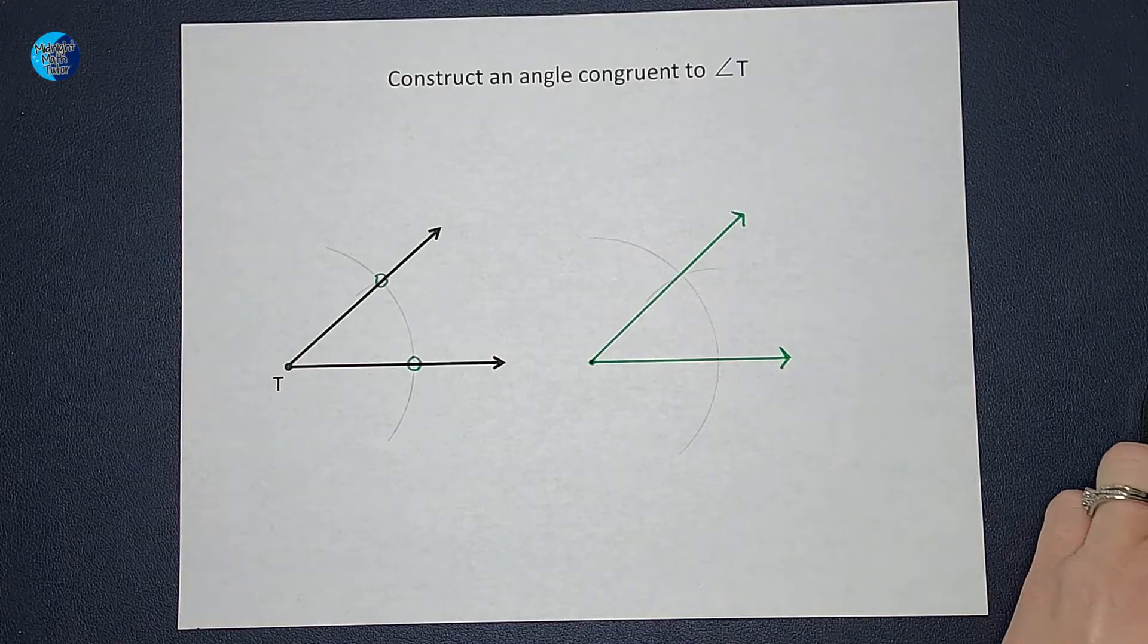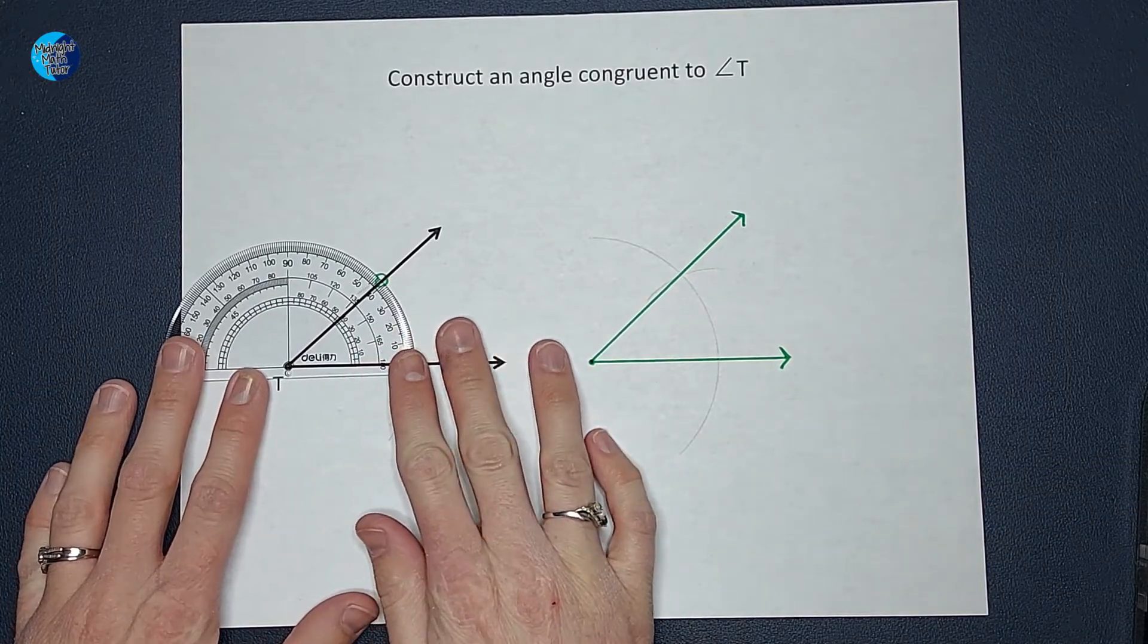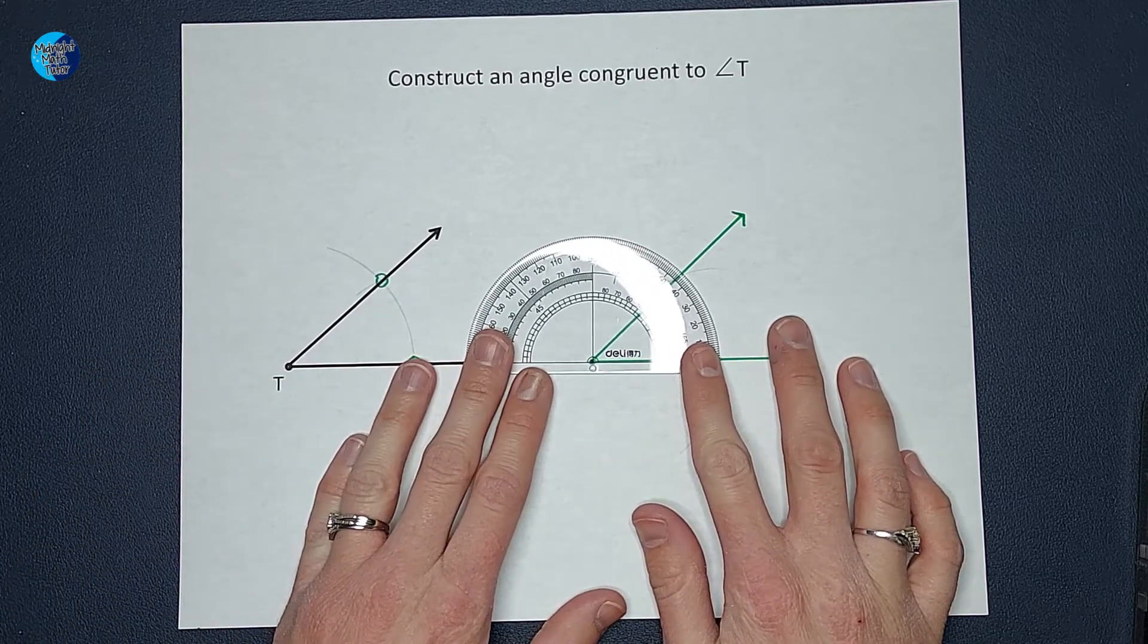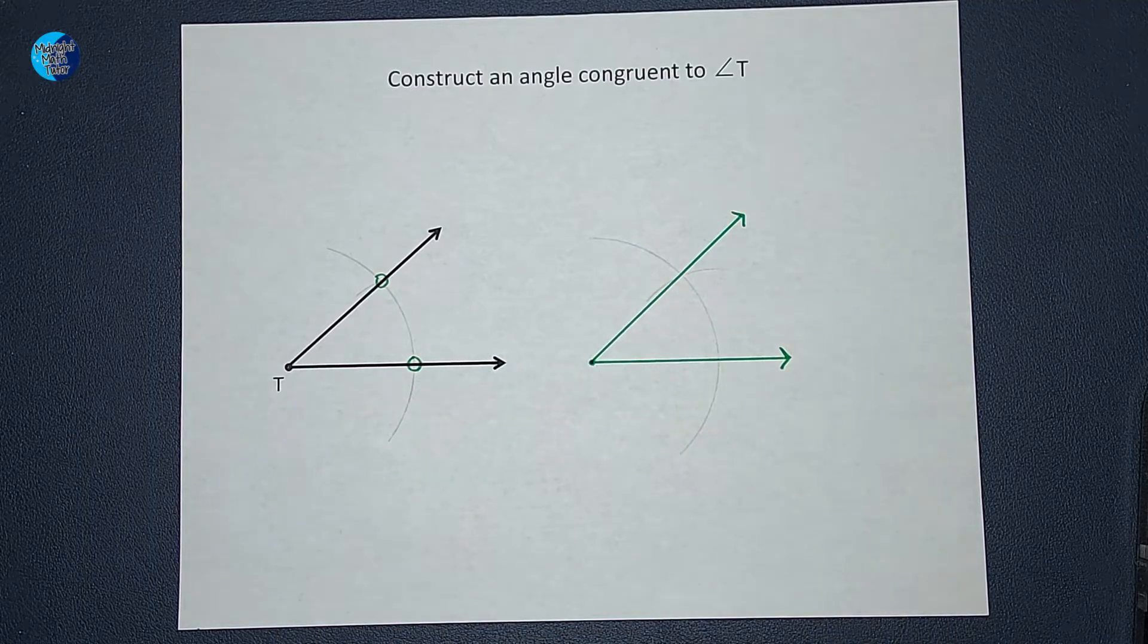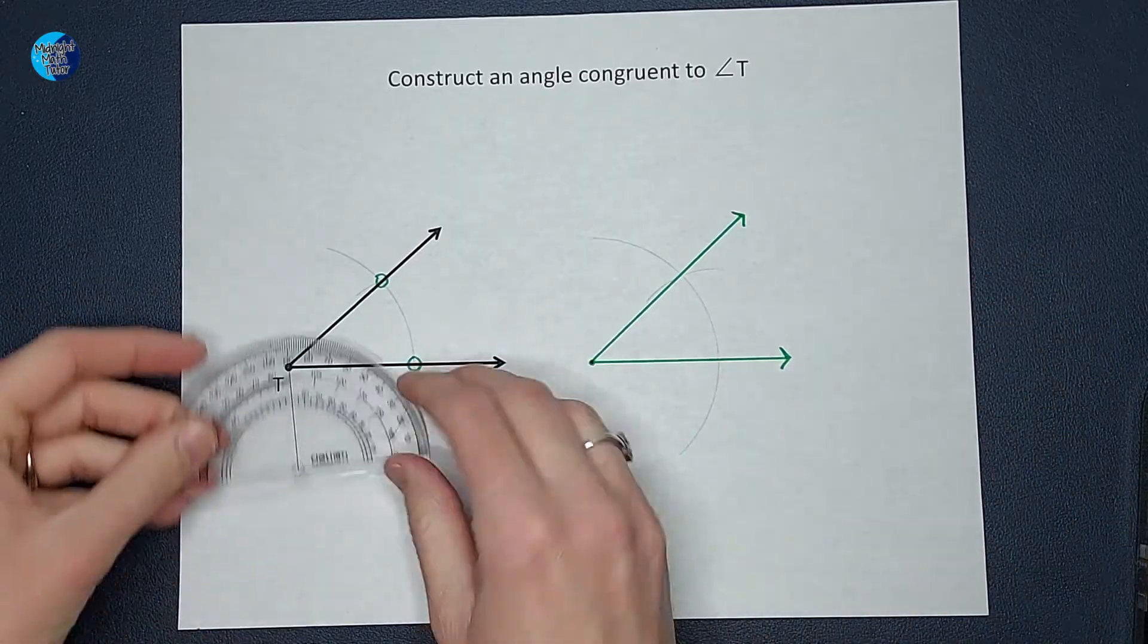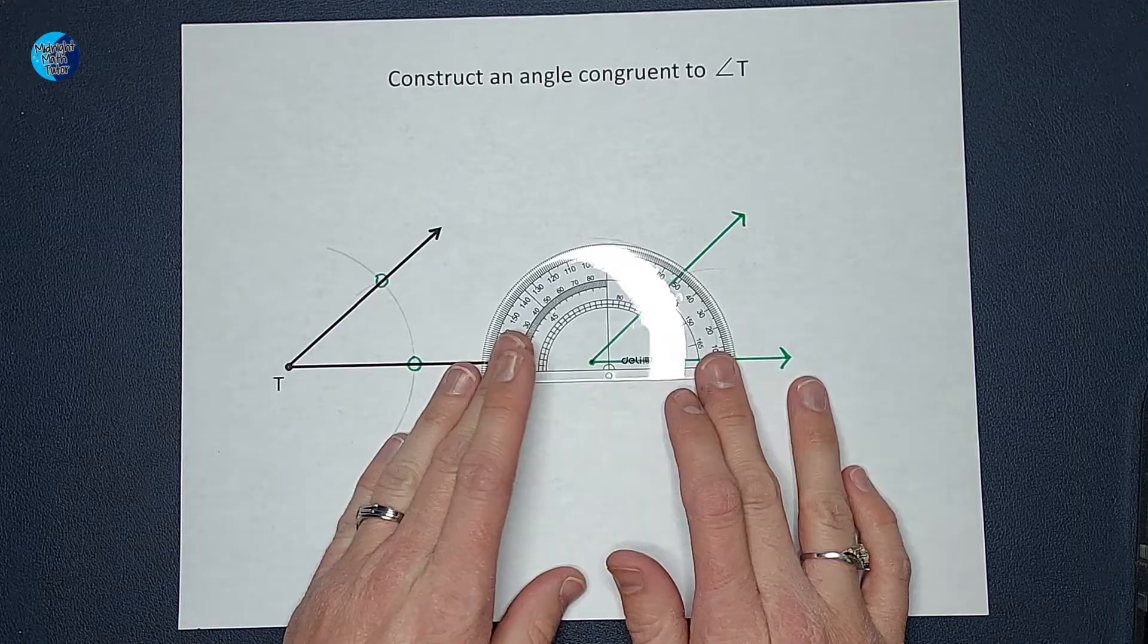Now you can always go ahead and use a protractor and just double check that they are congruent. And I am feeling pretty good about it. Keep in mind that if it isn't exactly perfect, it's because we're humans and not machines. But as long as they are pretty darn close, feeling pretty good about it.